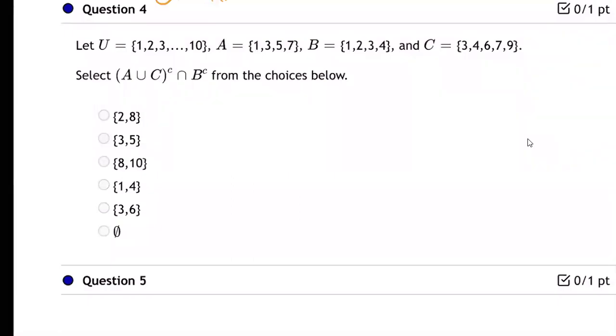Okay, so question number four. There's the universal set. Here's A, B, and C. They're asking us to find A union C complement overlap B complement from these multiple choice options. Okay, so let's give it a try.